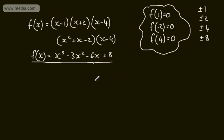Clearly some choices are better than others. If you look ahead, it's worth thinking about whether a value is likely to work. I generally start with 1, then go to minus 1, 2, and minus 2 if it's not obvious.